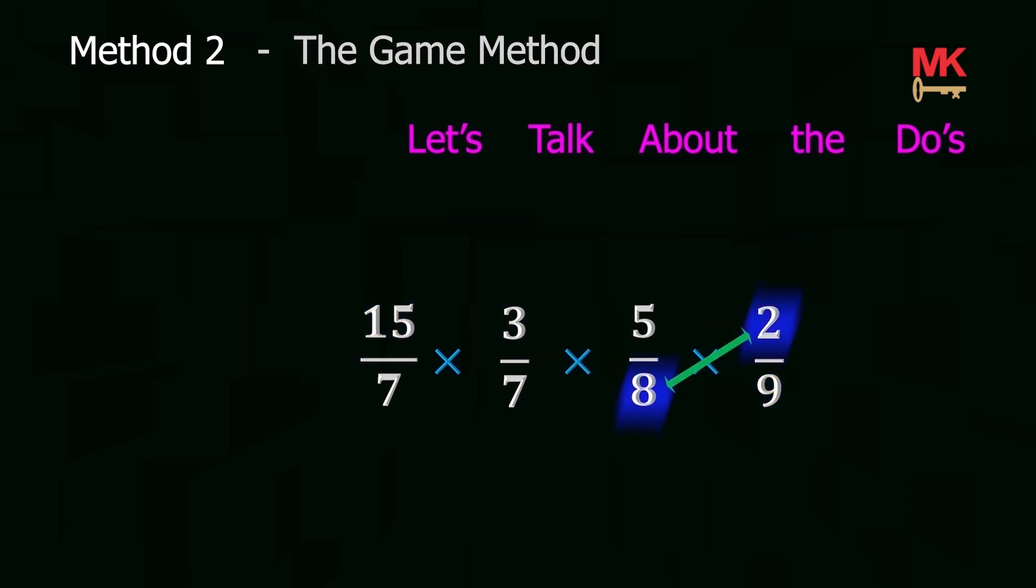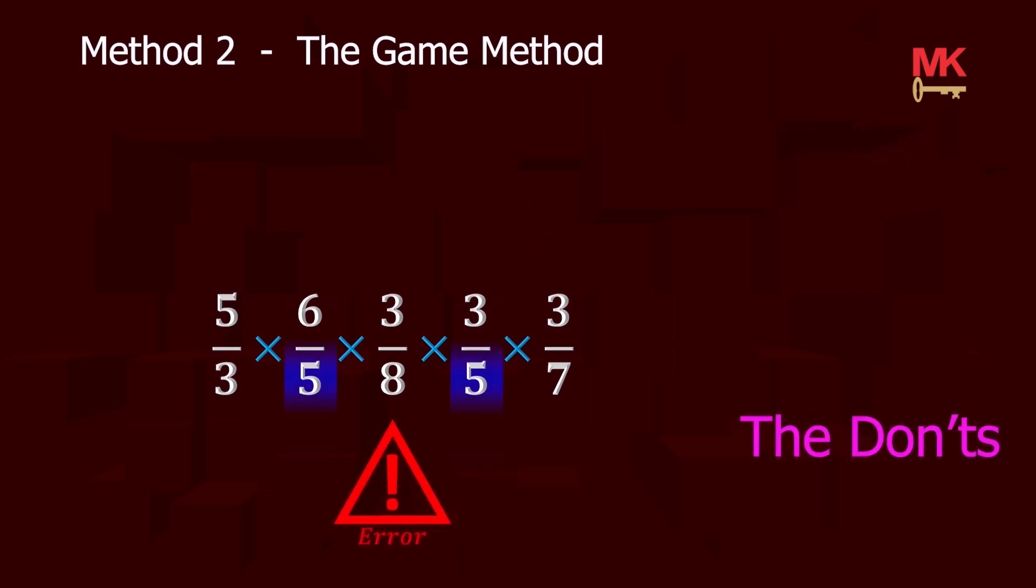Now, let's talk about the don'ts. On no condition must a single number at the bottom cancel more than one number at the top and vice versa. That means, when a number has been cancelled, it has been cancelled. No two numerators should cancel out. No two denominators should cancel out. These are the don'ts in this game. Doing any of these will get you penalized.